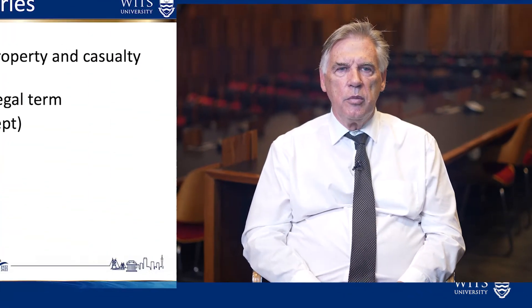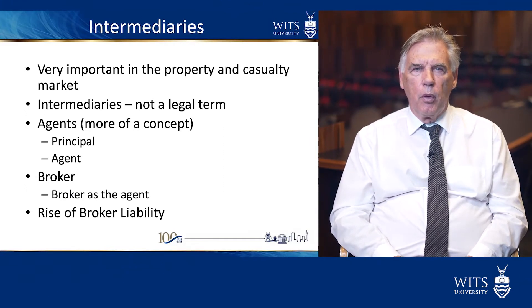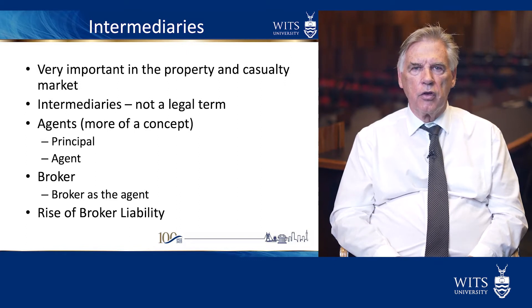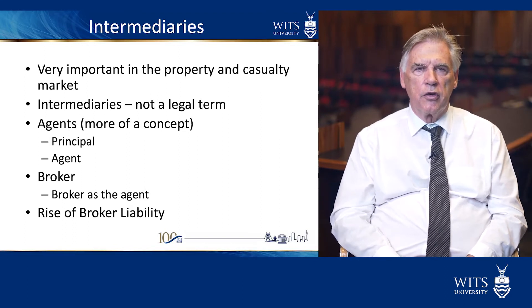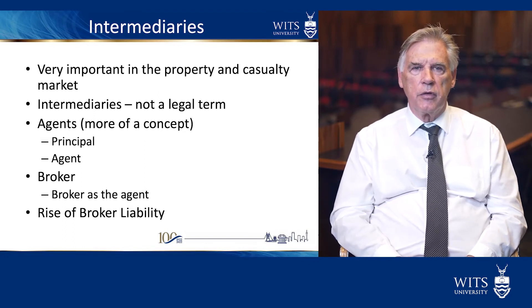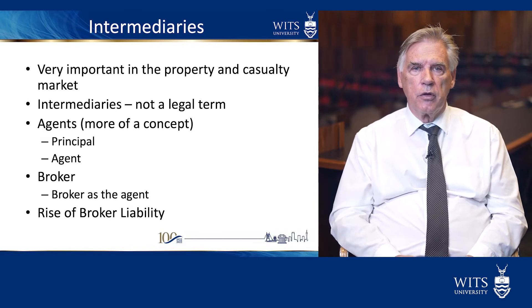The last topic covered in book number two is the intermediary. The intermediary is a person between the insured and the insurer, and is very important as far as the property and casualty market is concerned. We have independent intermediaries, which started somewhere in the 1950s, and by far in South Africa at least, the bulk of insurance is placed through intermediaries.